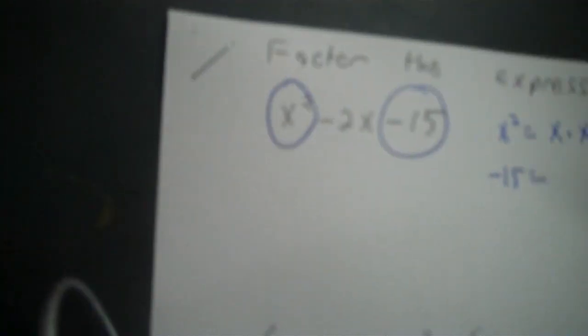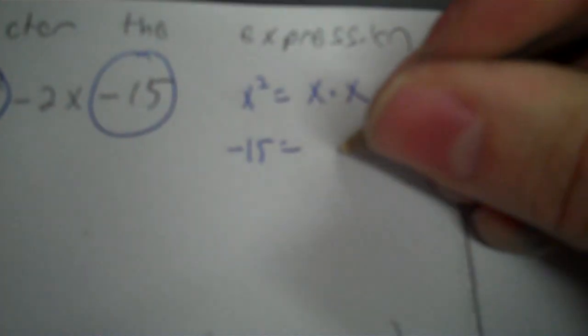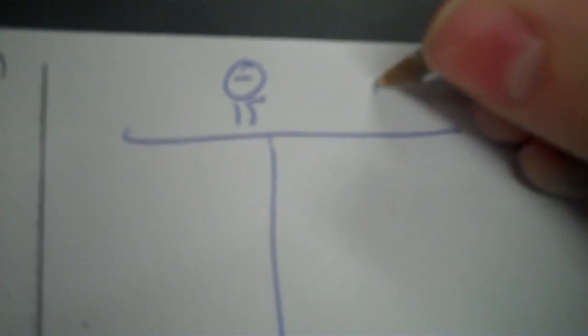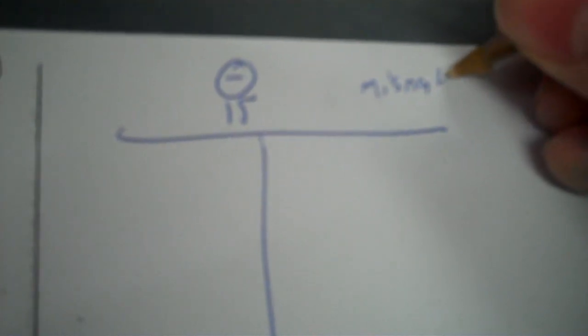You're gonna write x second equals negative 15. So x second is the same thing every time, it's always x times x. Now to find what times what's negative 15, we're gonna need our table. We put negative 15 up there. A negative is a mismatch, so you put a positive on one side, negative on the other.